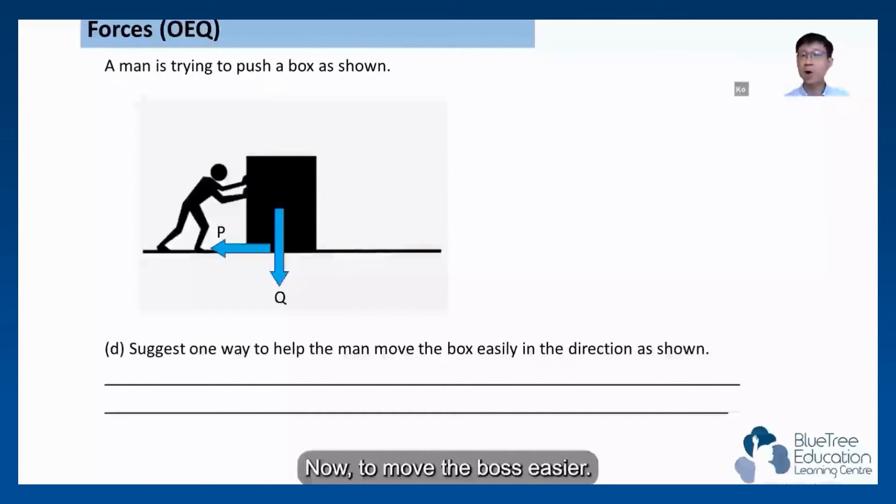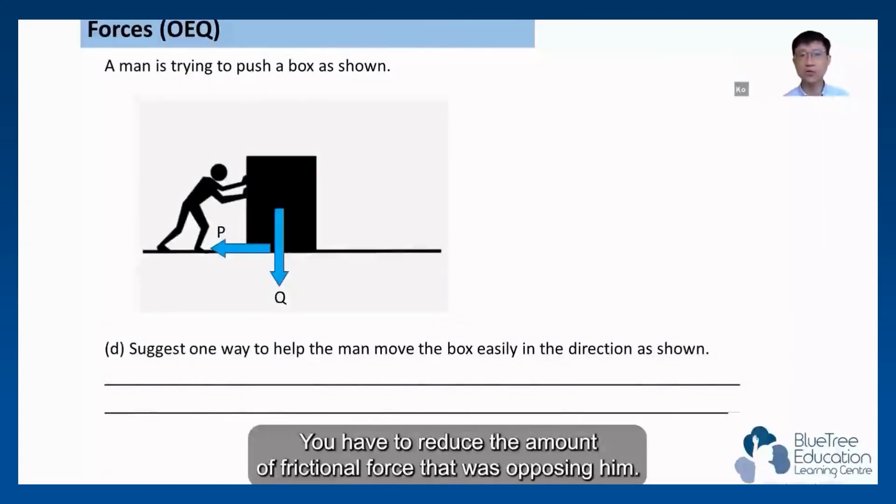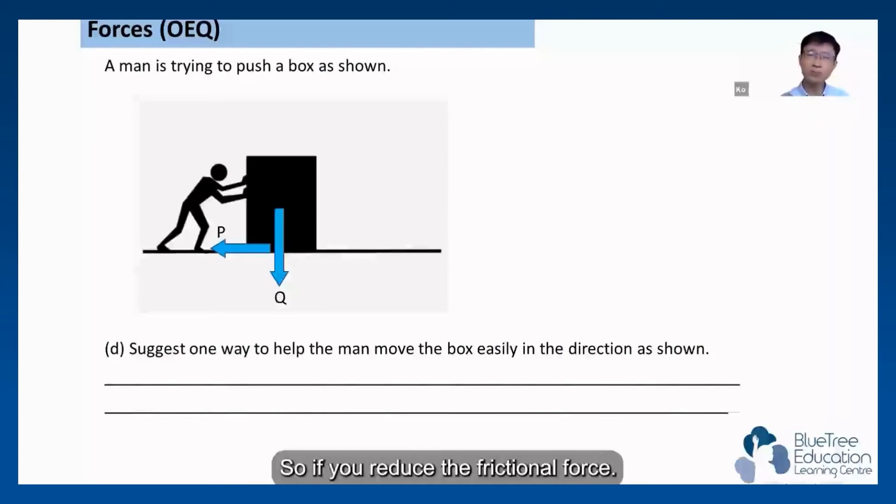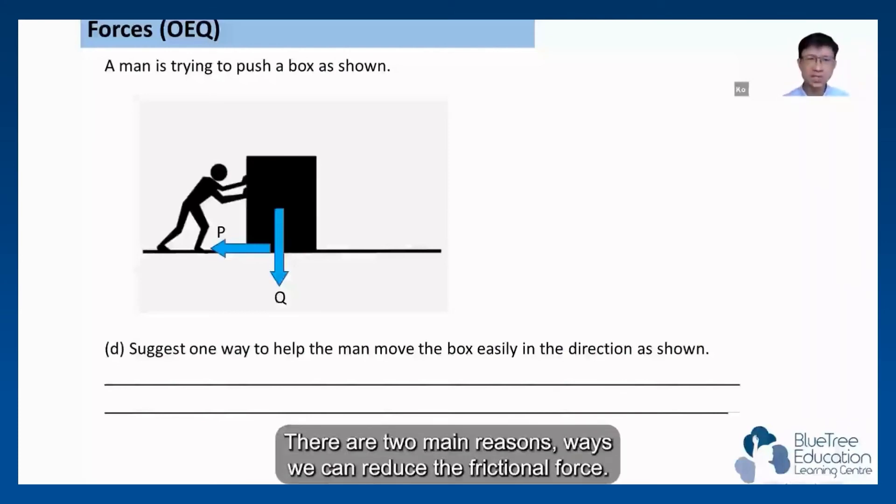Suggest one way to help the man move the box easily in the direction as shown. Now to move the box easier, you have to reduce the amount of frictional force that was opposing him. So to reduce the frictional force, there are two main ways we can reduce the frictional force.